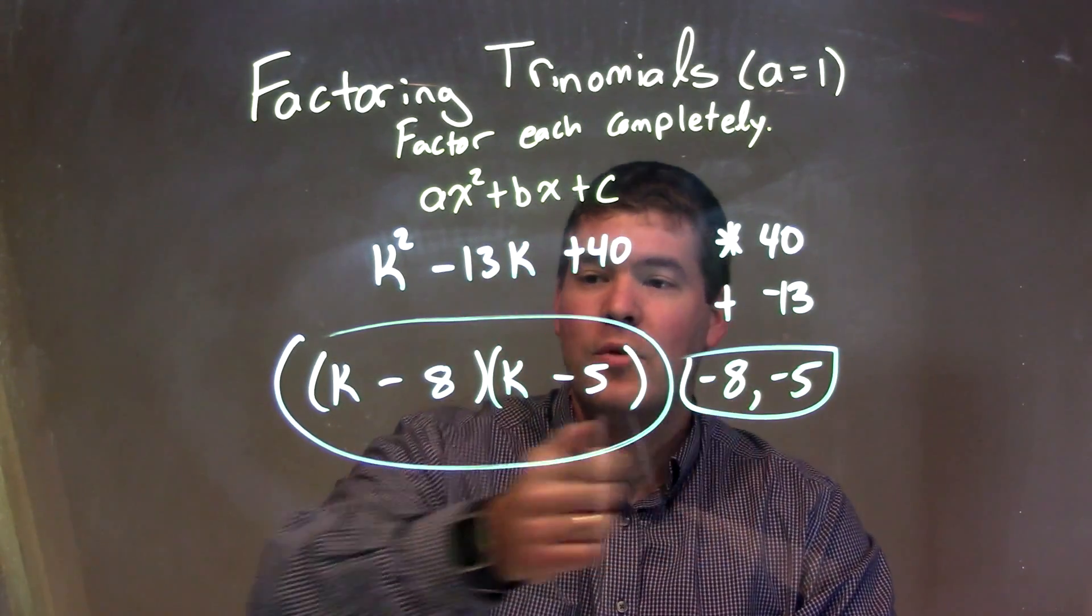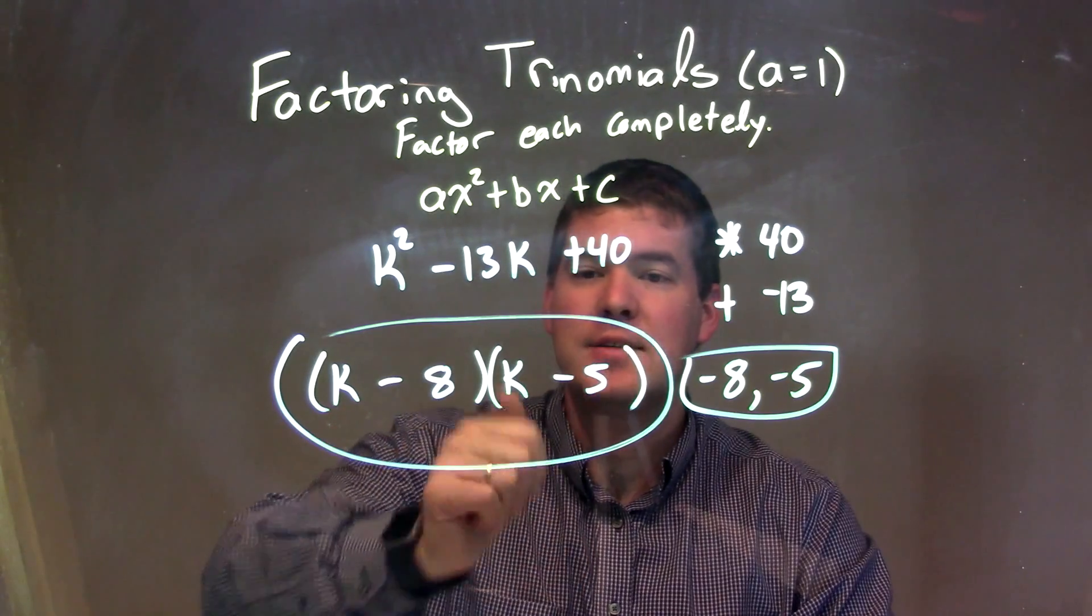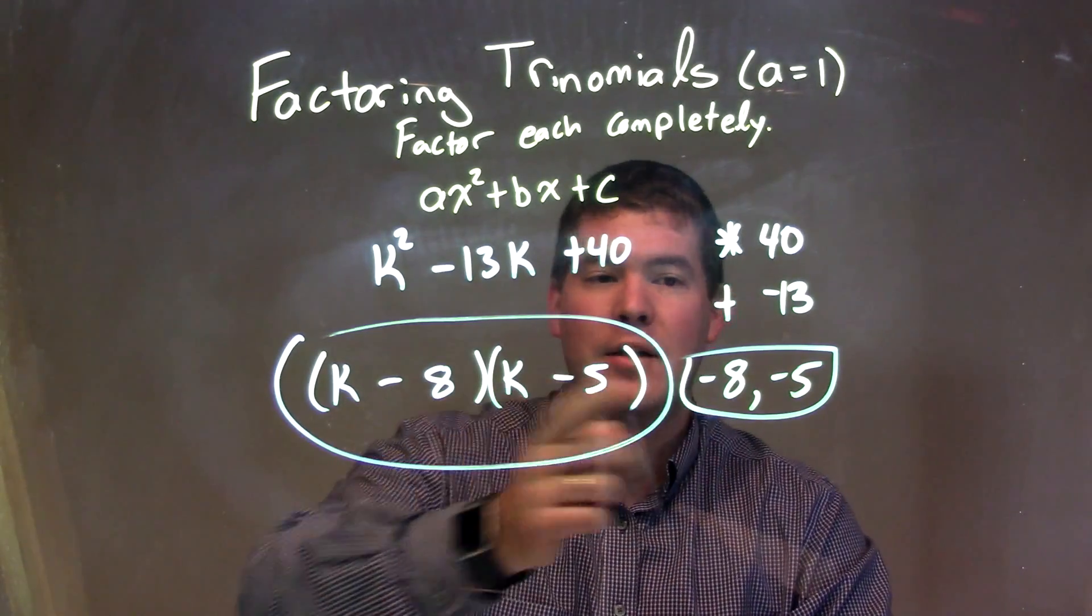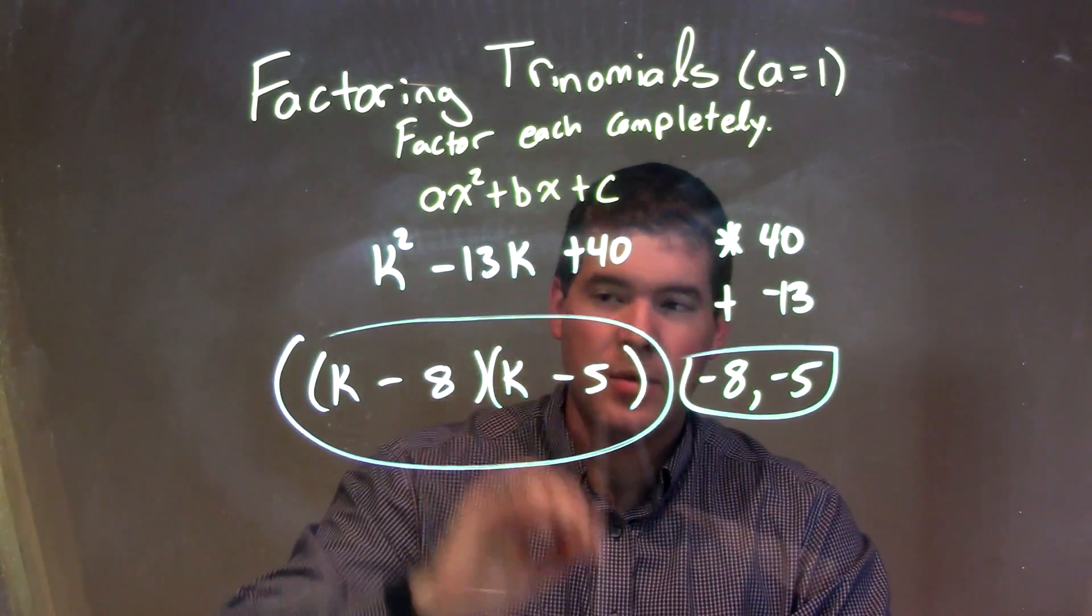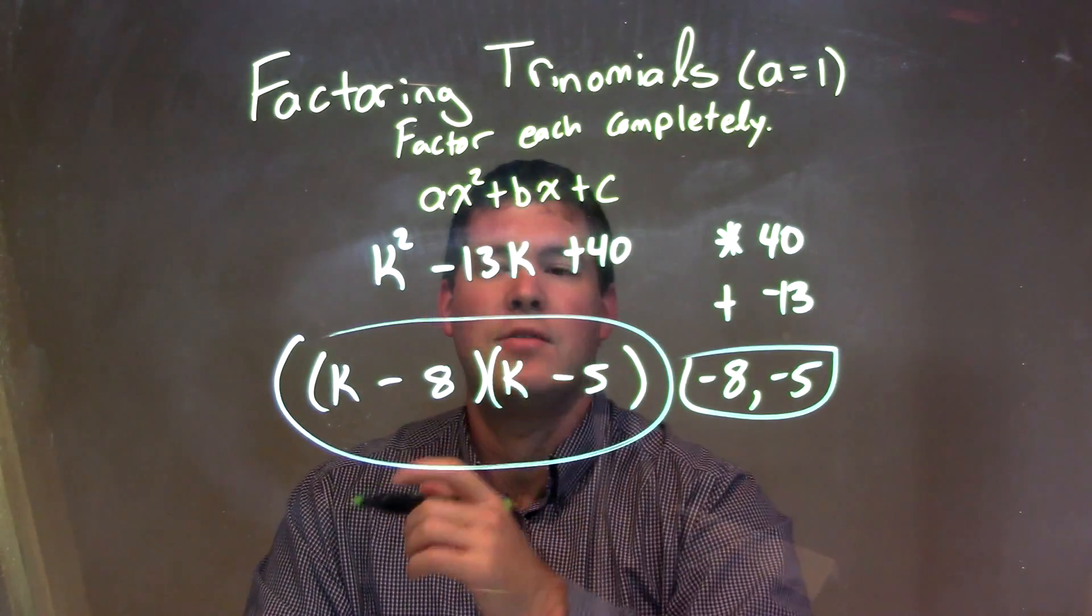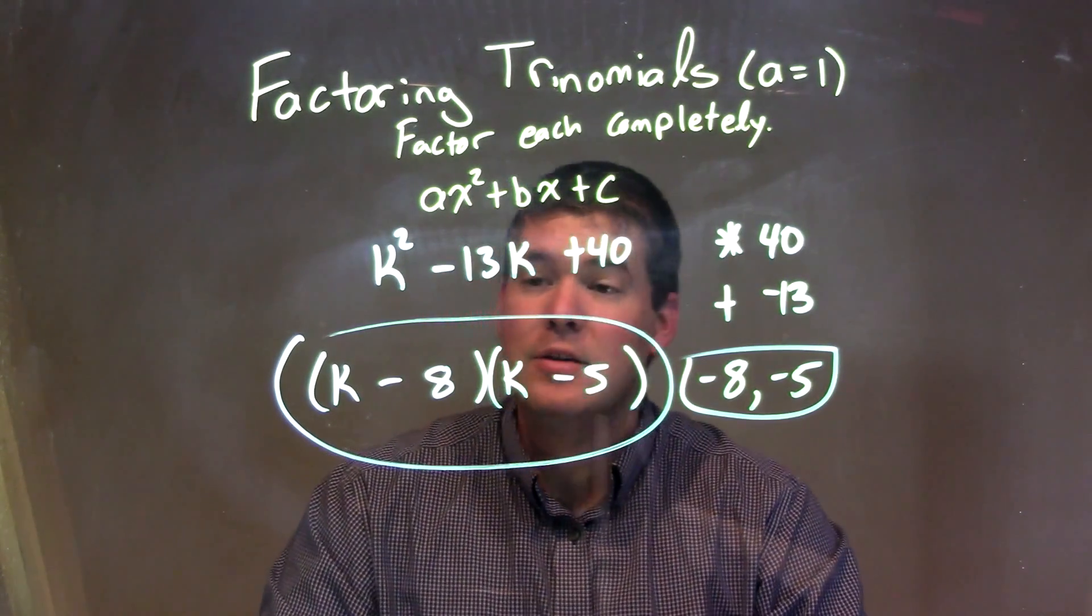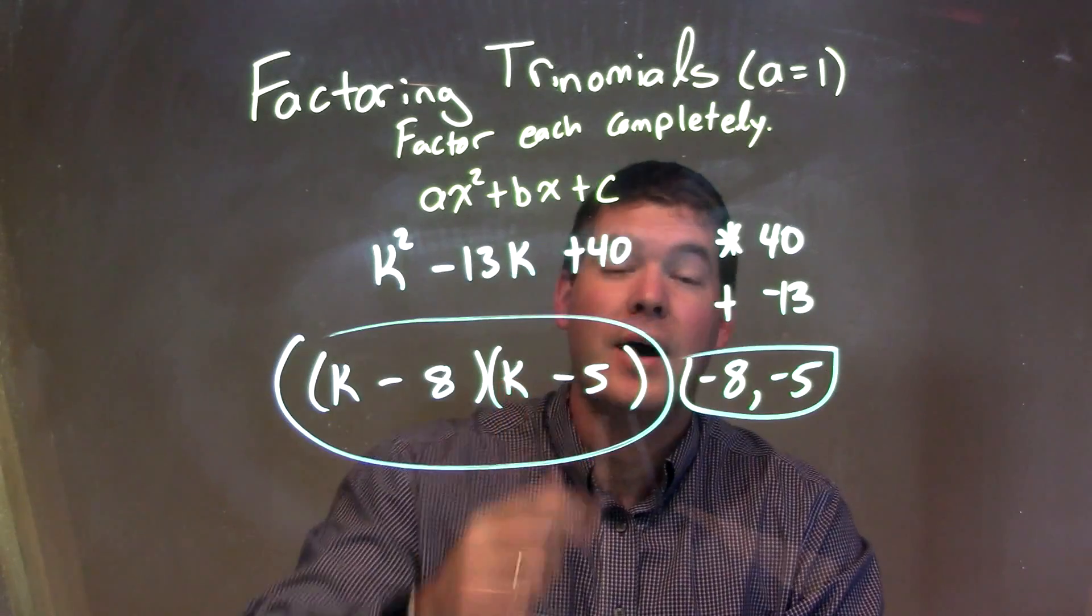So we write them out, factor k minus 8 times k minus 5. It doesn't matter the order, but in this case, we have the negative 8 first and negative 5 second. So our final answer is k minus 8 times k minus 5.